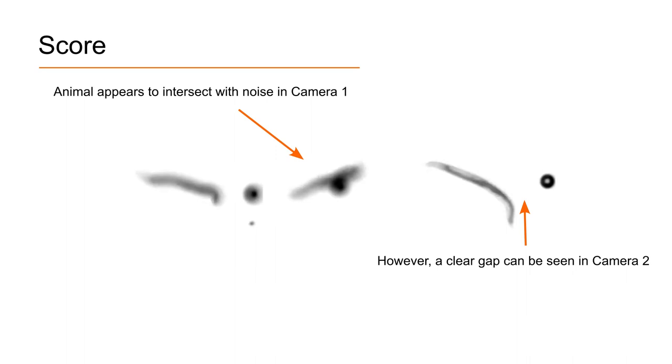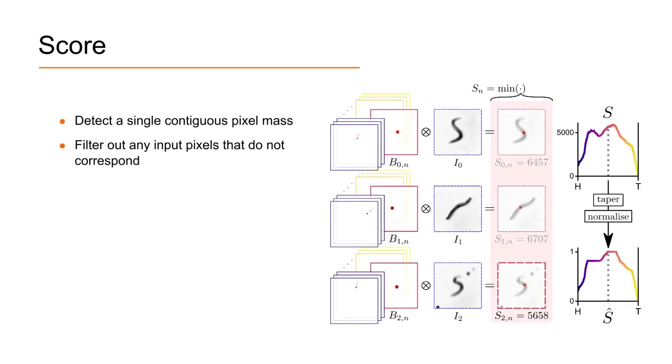When the animal truly intersects with environmental interference, it can be impossible to differentiate between the two, but in the majority of cases there exists a gap between the worm and the noise that is visible in at least one of the views. By ensuring that the curve corresponds to a single contiguous pixel mass in all of the images, we are able to safely ignore other artifacts.